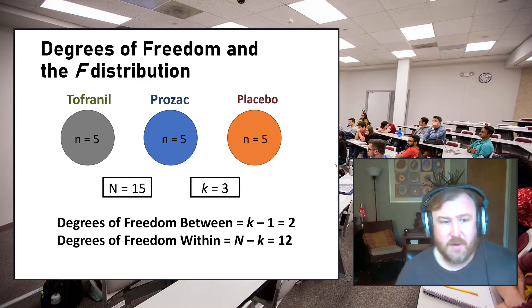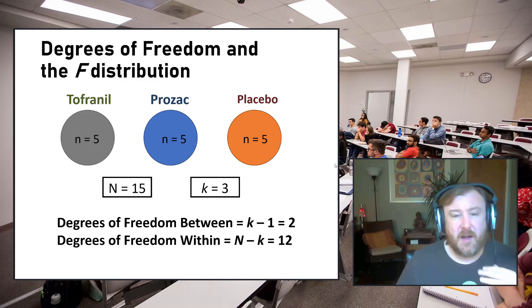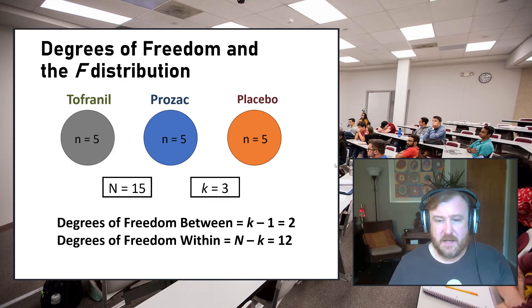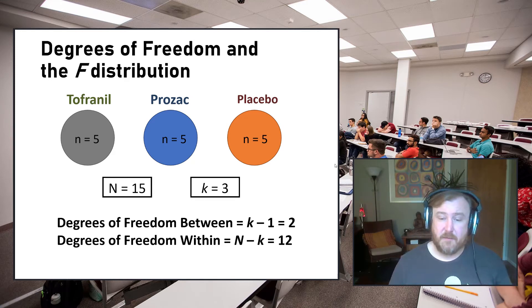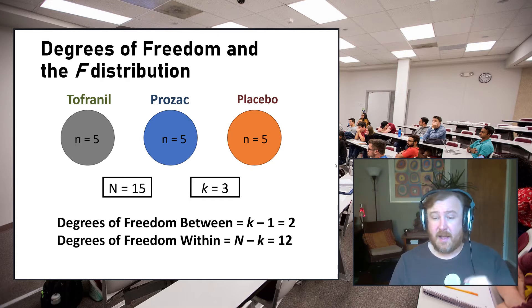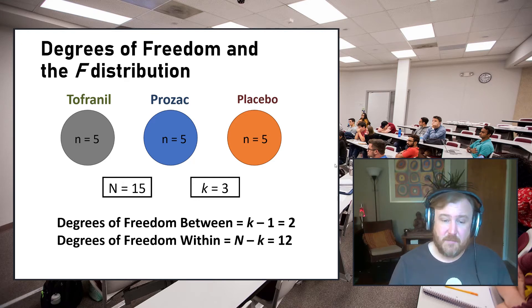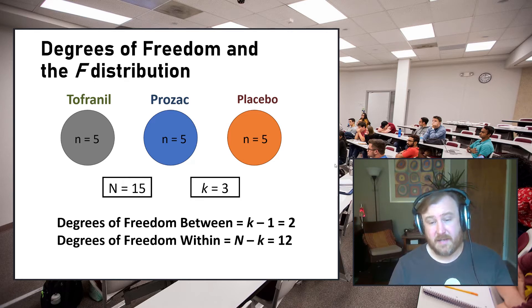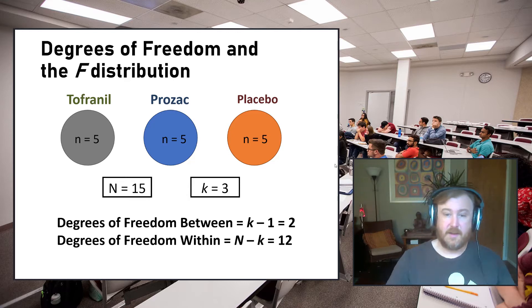Going back to our original example — Tofranil, Prozac, placebo, 15 total people, three levels — the degrees of freedom between (numerator) is k minus 1, which equals 2. The degrees of freedom within (denominator) is N minus k, which is 15 minus 3 equals 12. So we have degrees of freedom of 2 and 12.